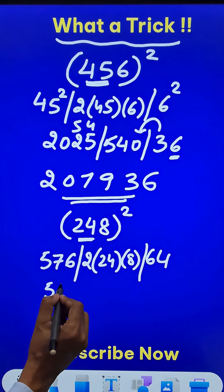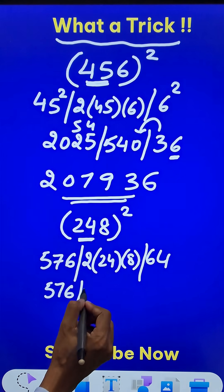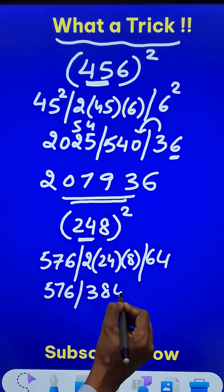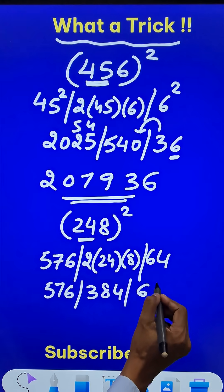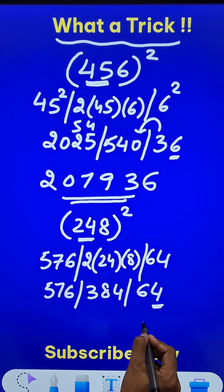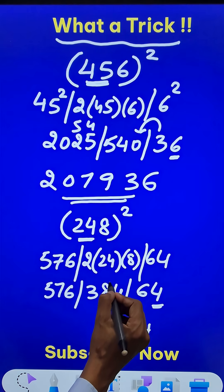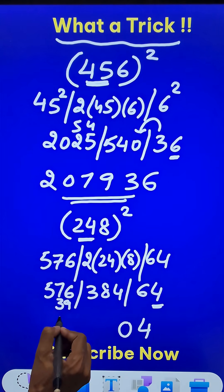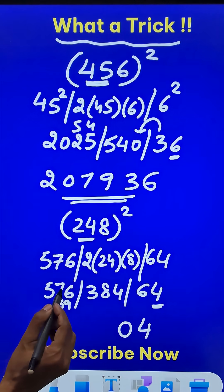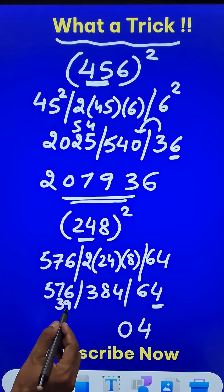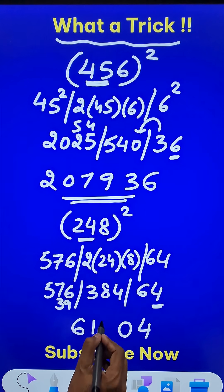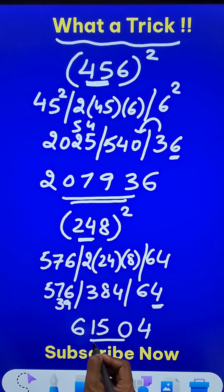Now 576, and when you multiply these, 48 times 8 is 384. And finally, the 64. So start writing 4. 6 carried makes it 390. So 0, 39 carried makes it 576 plus 39 which is 615. So 6, 1, 5, 0, 4 is the square of 248.